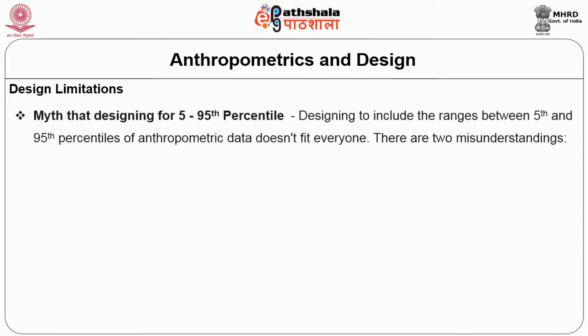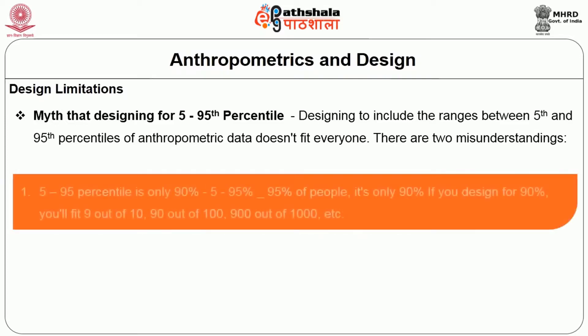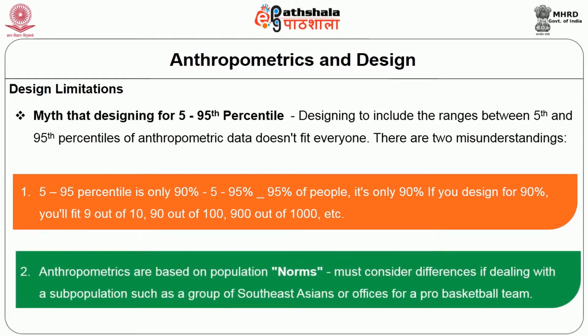The second myth is designing for the 5th or 95th percentile. Designing to include only the range between the 5th and 95th percentile of anthropometric data doesn't fit everyone. The 5th to 95th percentile is only 90% of the population. If you design for 90%, you will fit 9 out of 10, that is 90 out of 100, or 900 out of 1000 — and the proportion keeps going.